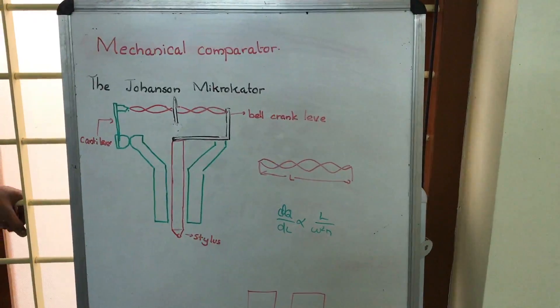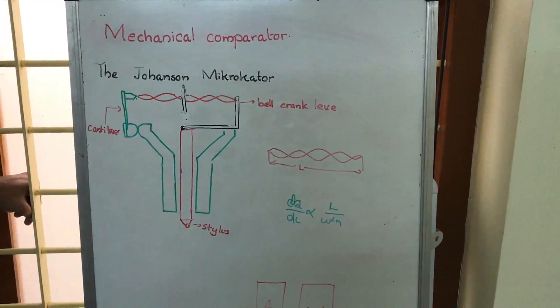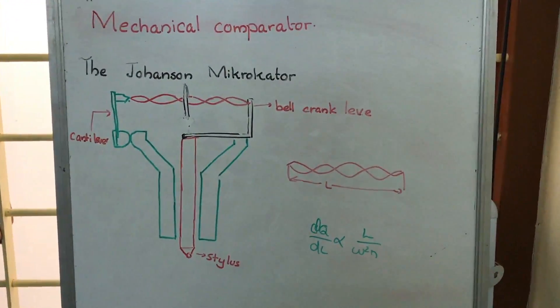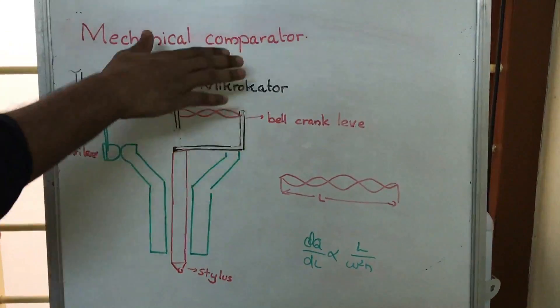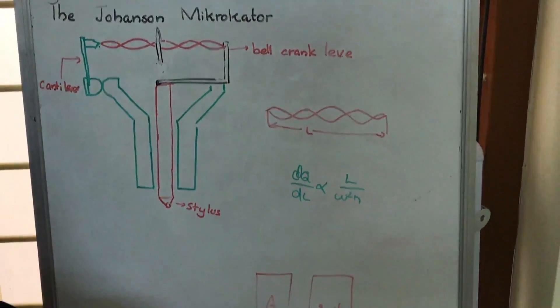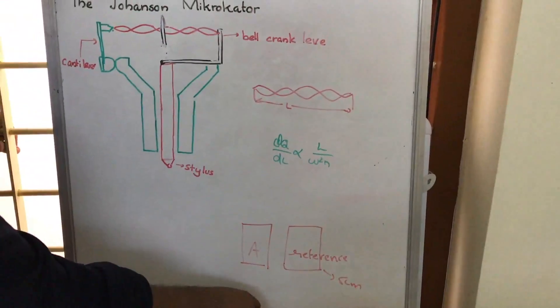The mechanical comparator, of which one type is the Johnson microcator, is being discussed here. In a mechanical comparator, we measure the dimension of a given body by use